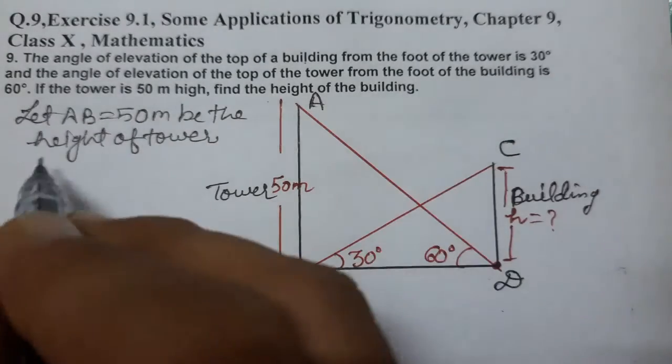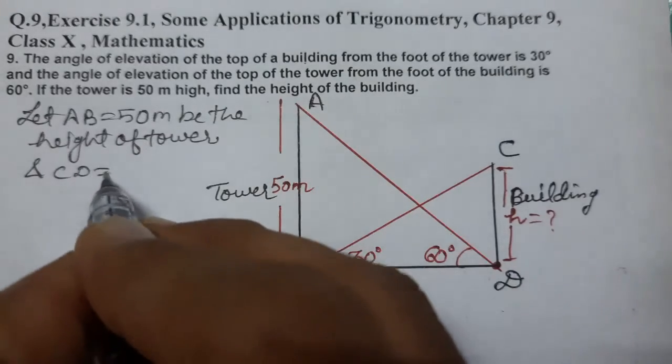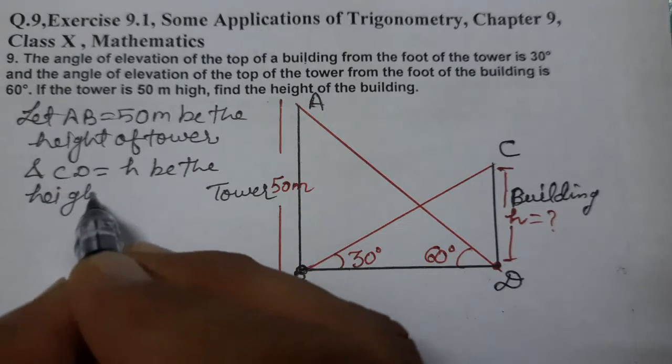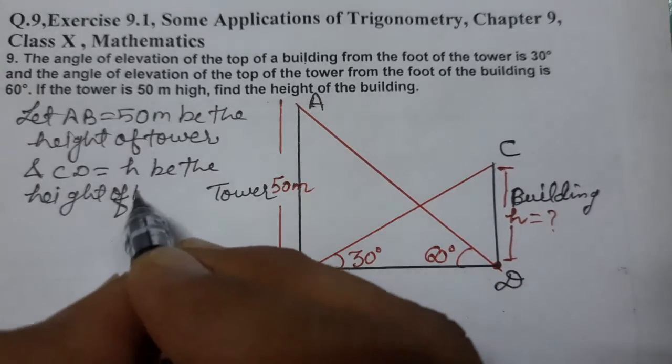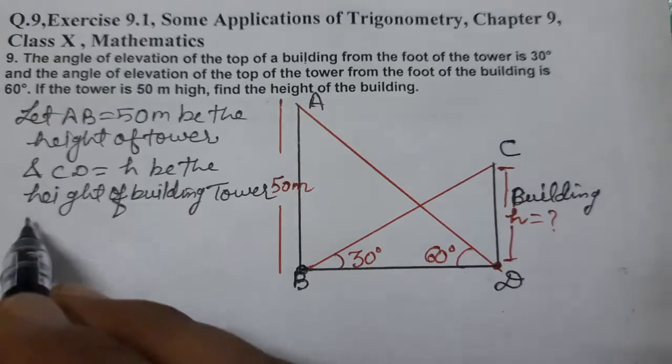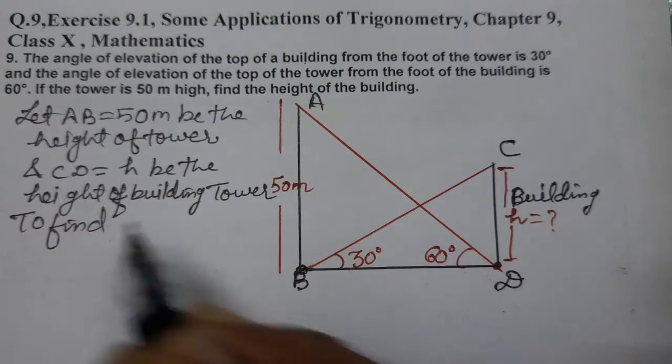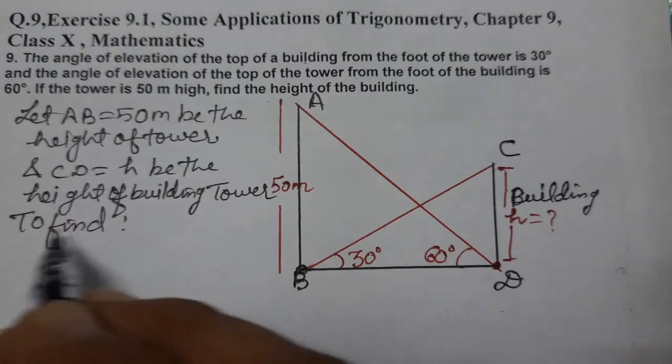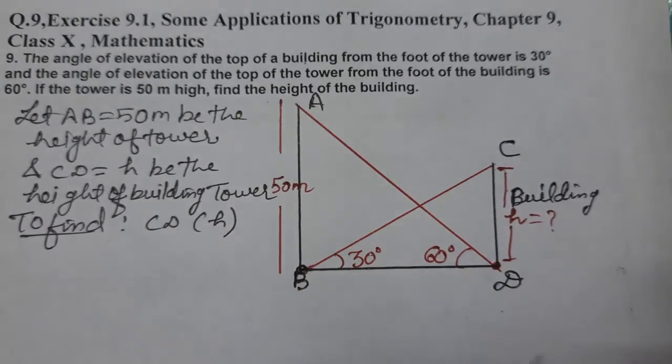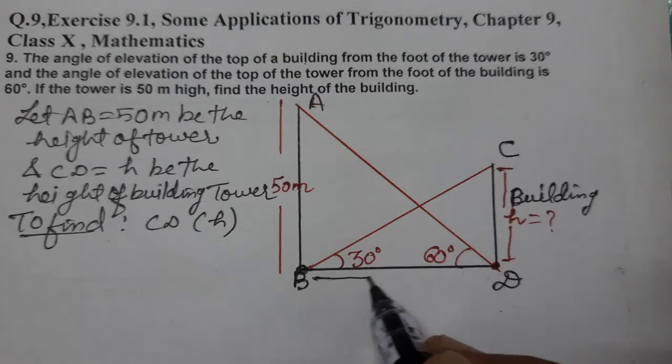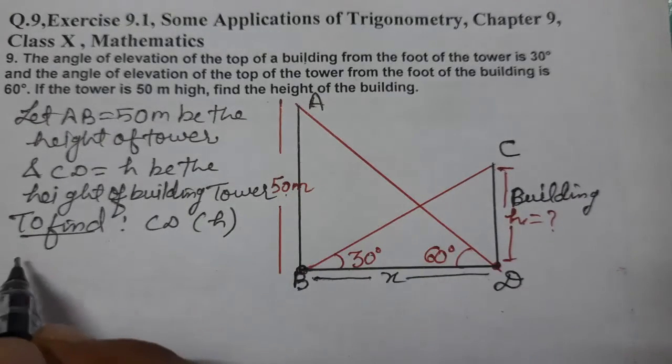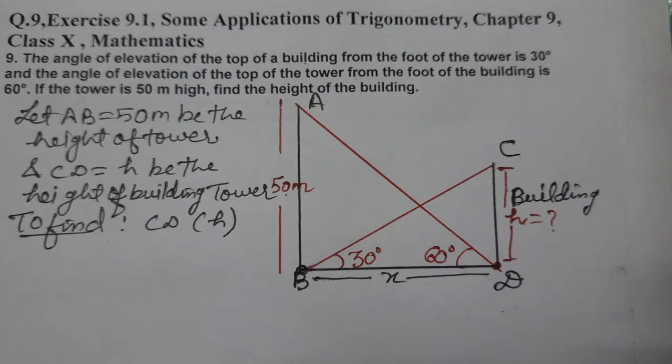So let's write: let AB equals to 50 meter be the height of tower. And CD equals to h be the height of building. We need to find CD, yani h nikal ni. There are two triangles, two triangles nazar aa rahe hain. Ye x maan lete hain isko x, aur ye h ho gaya, ye 50 given hai.